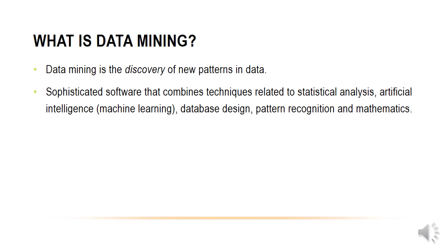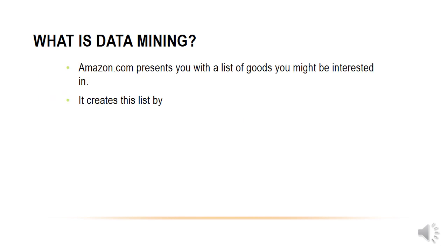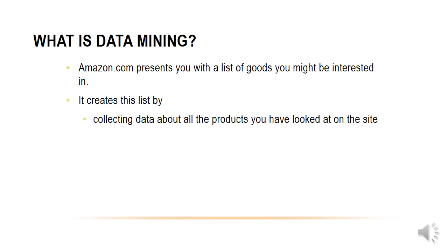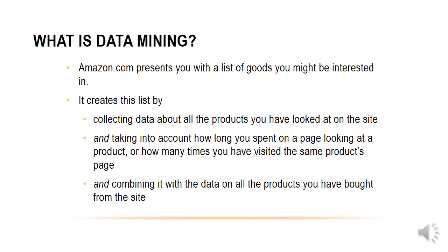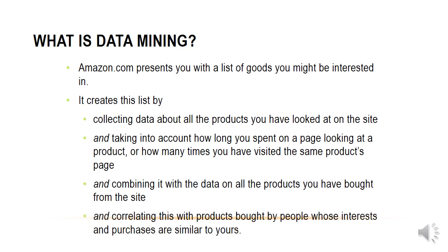Amazon.com presents you with a list of goods you might be interested in, created by collecting data about products you've looked at on their site. It takes into account how long you spent on a page, or how many times you've visited the same product's page. This is combined with data on all the products you've bought from the site. They also correlate with products bought by people whose interests and purchases are similar to yours.